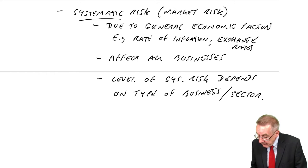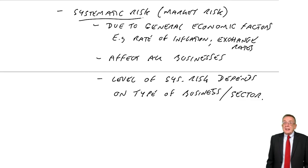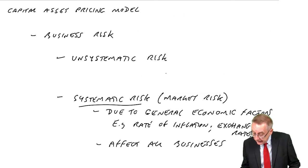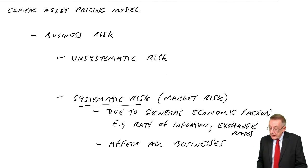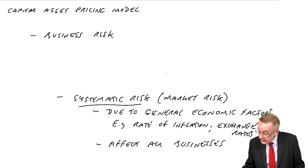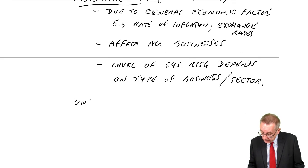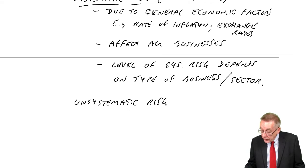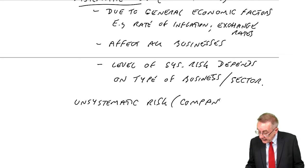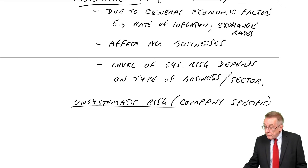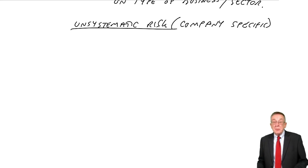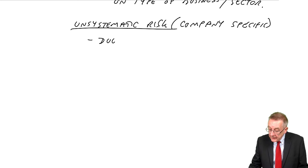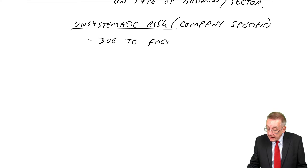So that's one reason a business is risky — economic factors. The other reason is unsystematic risk, or the other name for this is company-specific risk. And this risk, the other thing that affects the profits, is due to factors within the particular company.